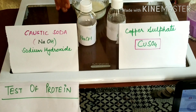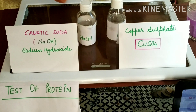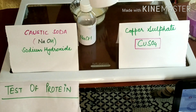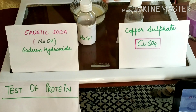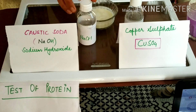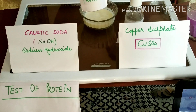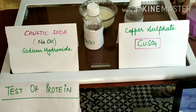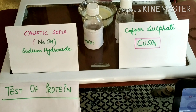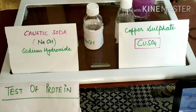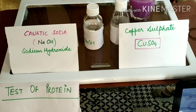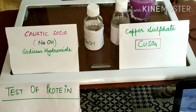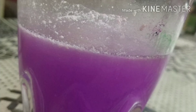With the help of these two chemicals, let's check whether the milk contains protein or not. First, I have taken milk and I will add a few drops of copper sulfate — it is blue, so the milk becomes a little bit blue. Then I will add 5 to 10 drops of NaOH, that is caustic soda. After adding caustic soda and waiting a few minutes, the color changes to violet. This beautiful violet color indicates the presence of protein.